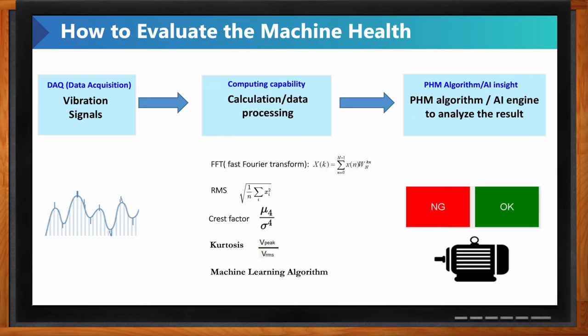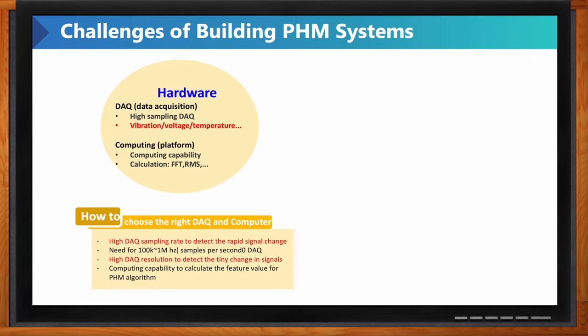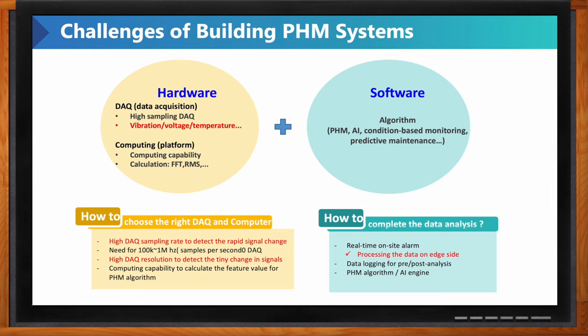When building a PHM system, you can divide the challenges into two parts. The first is hardware — this includes data acquisition to capture vibration signals, and computing to run calculations or AI algorithms. The second part is software — you need to do coding to build software that deals with all the data, performs PHM predictive maintenance analysis, and makes decisions based on all the data. These two parts represent the main challenges of building PHM systems.